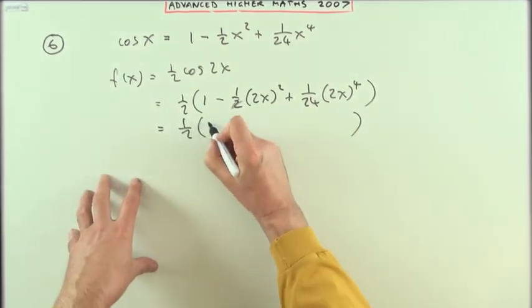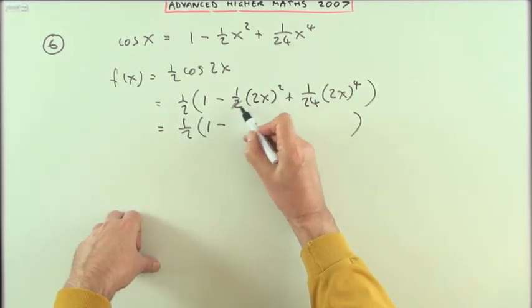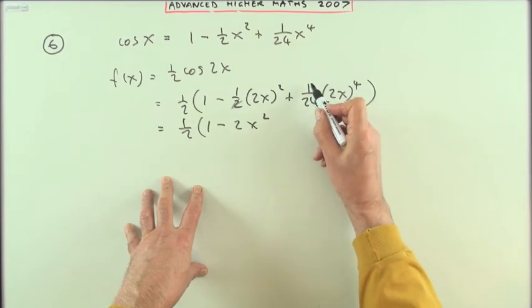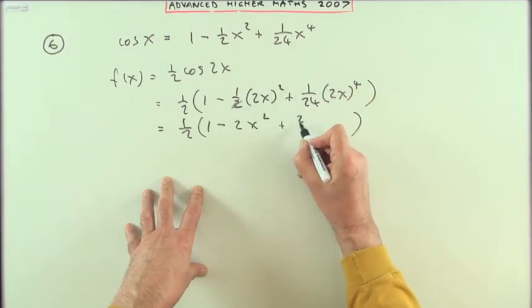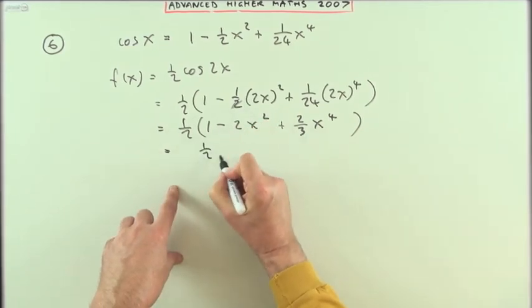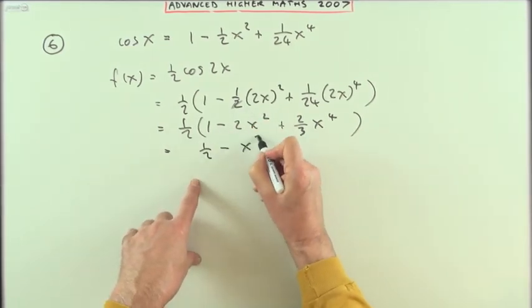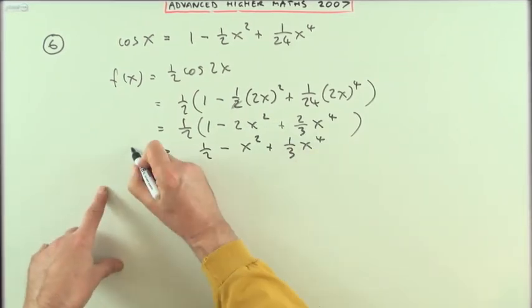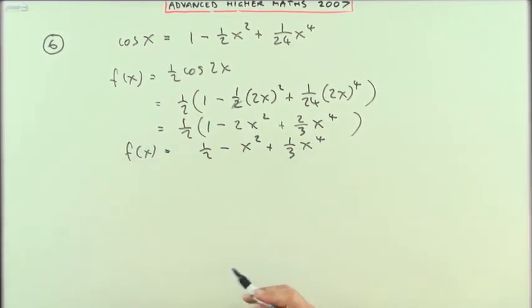Just tidy this little bit up. So what have we got? 2 squared is 4, a half of 4 is 2. 2 to the 4 is 16, 16 over 24 is 2 thirds. And then finally half of that: half of 1 is a half, a half of 2 is 1, and a half of 2 thirds just leaves you one of those thirds. And that's what f of x is meant to be in this question.